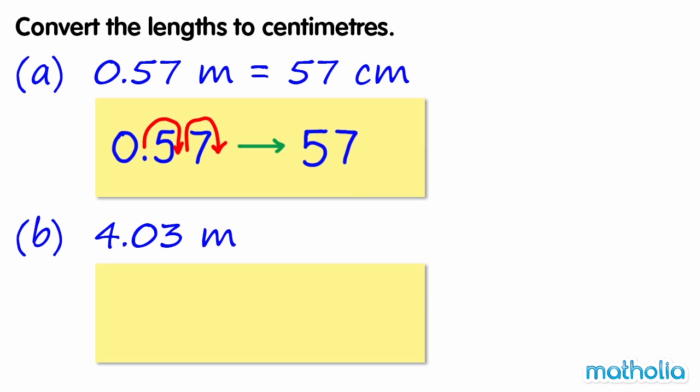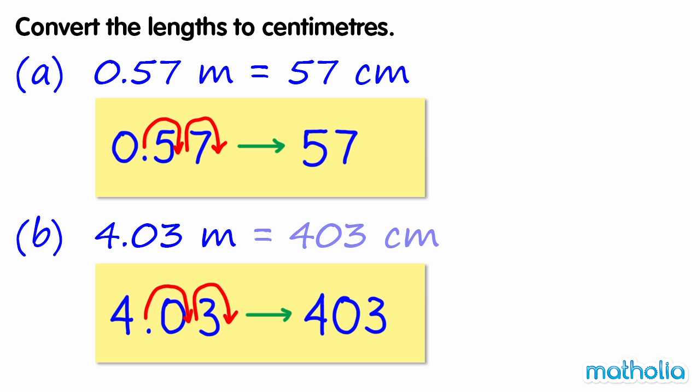B: 4.03 metres. Shifting two decimal places to the right gives 403. So 4.03 metres equals 403 centimetres.